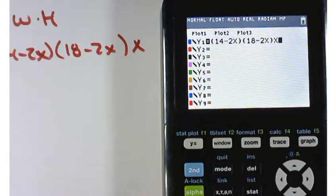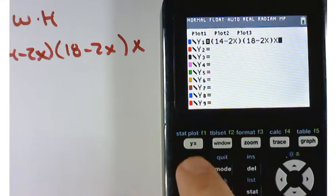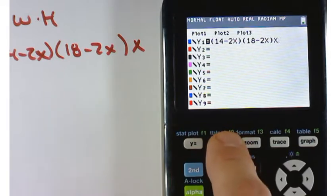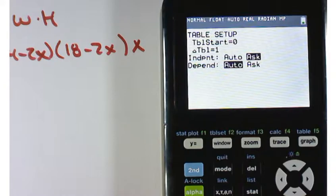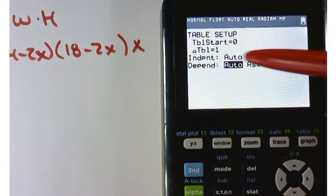Now I want to see what happens when we cut off various sizes. Some of you I've given a little box, so calculate the volume of your open air box. As a reminder, if we're going to do a table you want to make sure your table is set up correctly. Hit the second button then the window key. The important thing is that independence should be set to ask.